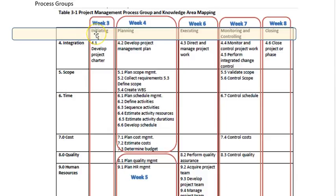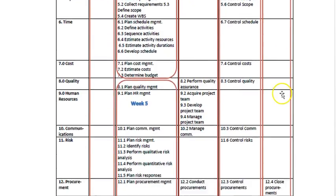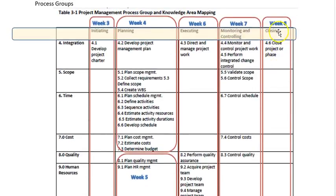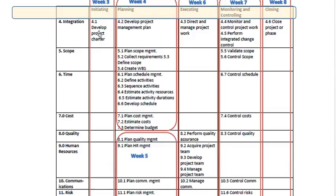In formal project management, there are approximately 47 different processes you will use during the course of building this garage. The very first of the 47 is developing a project charter, and the very last one is closing out the project or phase — meaning paying off the contractors and closing the project budget. A project goes through these processes in roughly a left-to-right order. The first process group is initiating: getting permission and funding to go forward and build the garage.